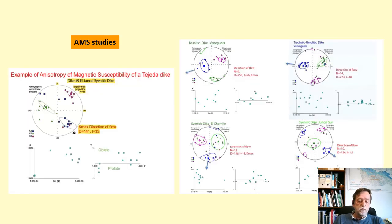The intrusives were sampled both from chilled margins and across to study their AMS to determine flow directions. To obtain flow directions, we relied on the Kmax axis. Results show coherent flow azimuths regardless of their time of emplacement.